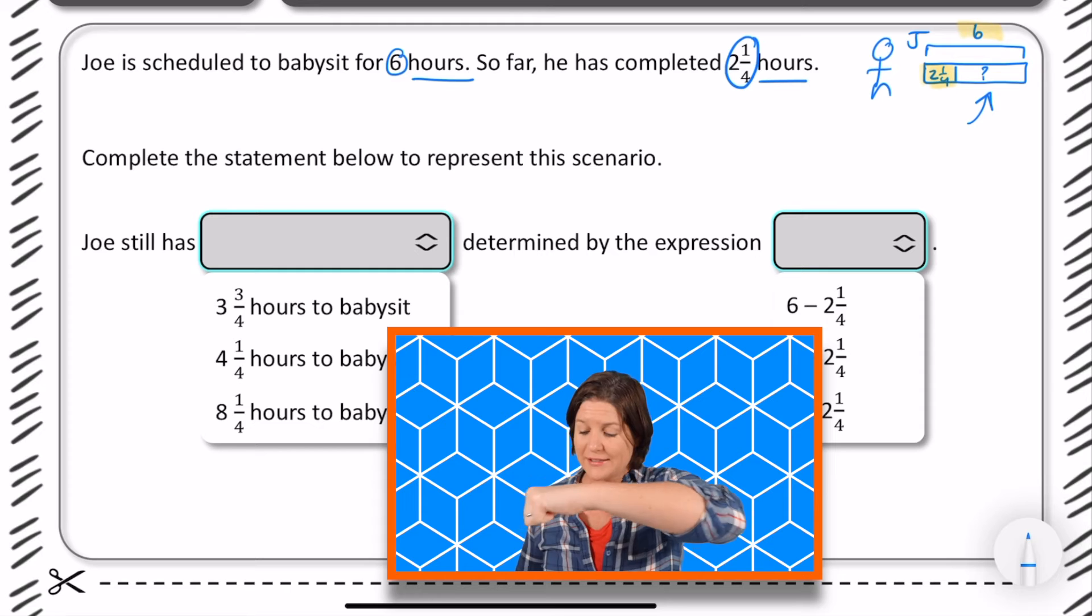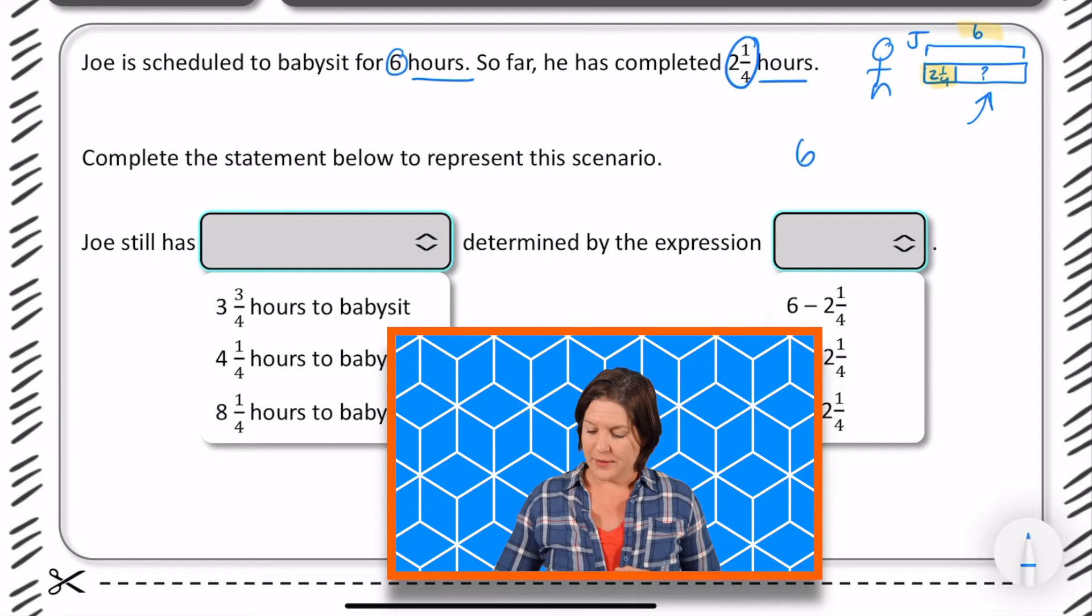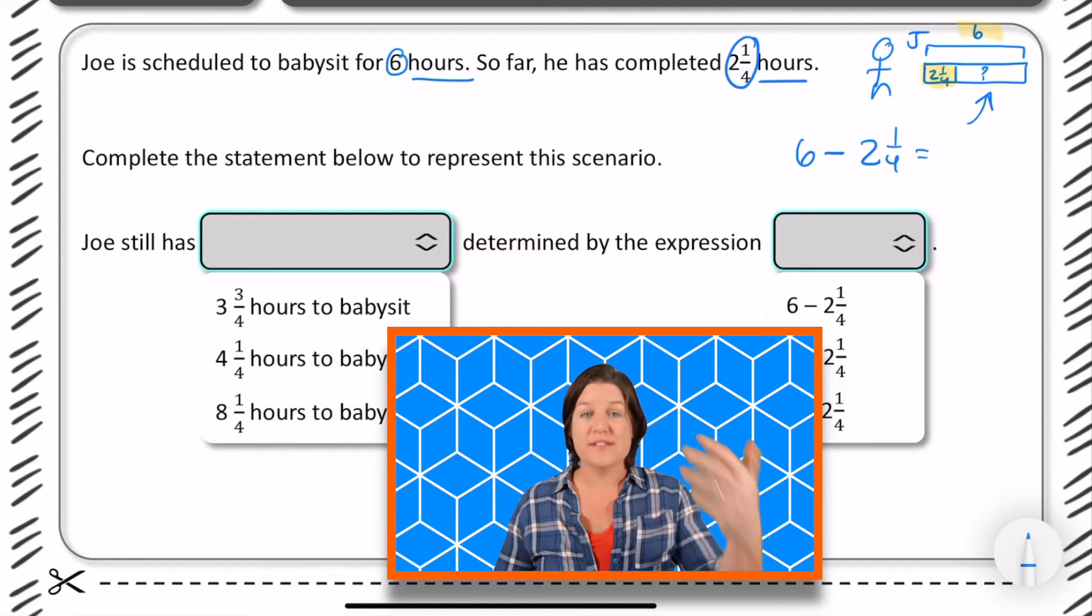Yeah, we're subtracting. We're subtracting the total, which is six, minus how much he has completed, which is two and one-fourth, to figure out how much he still has.